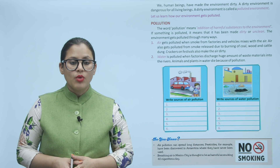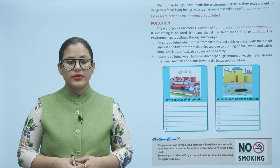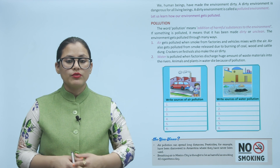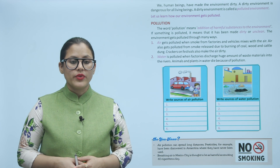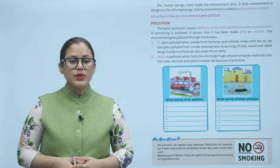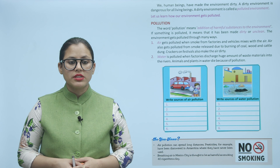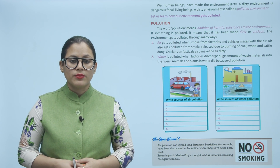Air gets polluted when smoke from factories and vehicles mixes with the air. Air also gets polluted from smoke released due to burning of coal, wood and cattle dung. Crackers on festivals also make the air dirty. Water is polluted when factories discharge huge amounts of waste materials into the rivers. Animals and plants in water die because of pollution.